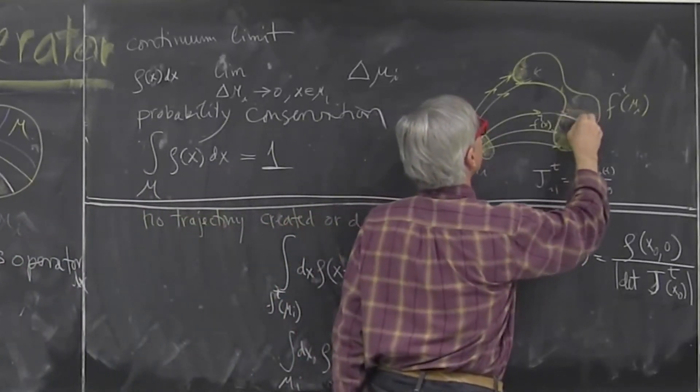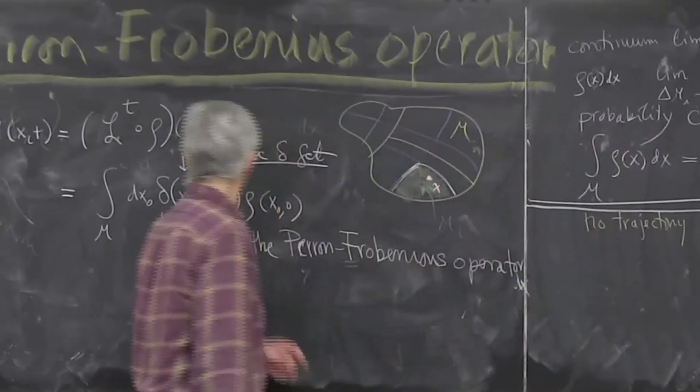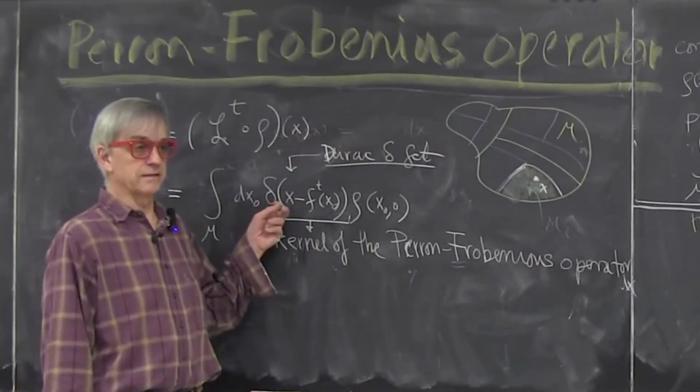so if I start here I end up at unique point after time t. Unique point means Dirac delta function.